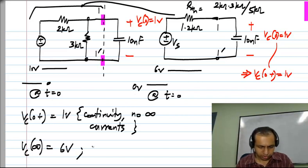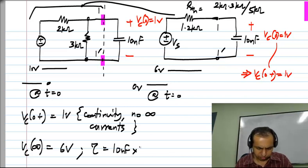And the time constant tau of course, is if you set VTS to 0, we will have this RTH across the capacitor. So it is 10 nanofarad times 1.2 kilo ohms, is 12 microseconds.